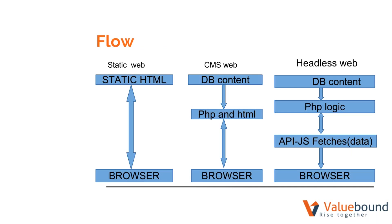This is the basic flow for static web, CMS web, and headless web. A static HTML page interacts directly with the browser with normal HTML content. Moving to CMS web, there will be a database and PHP logic which gets rendered to the browser. Moving to headless web, there will be an integration of a framework — here I use AngularJS. JSON data is used as static data from Drupal, which gets sent to the browser.